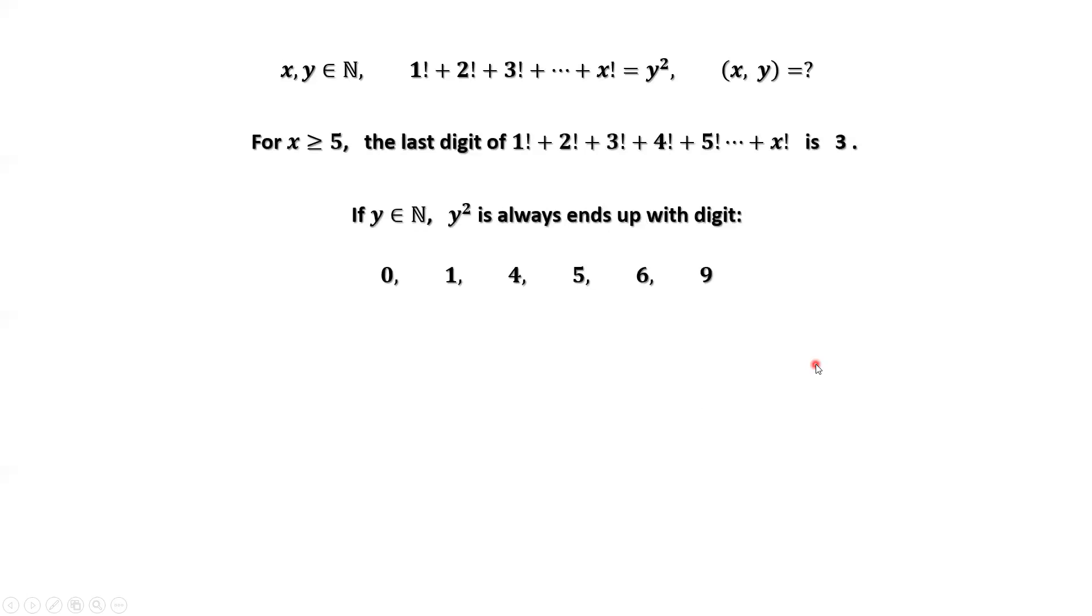What does this mean? This means the summation of x consecutive factorials cannot be a square of any integer y if x is bigger than or equal to 5.